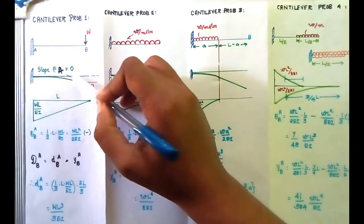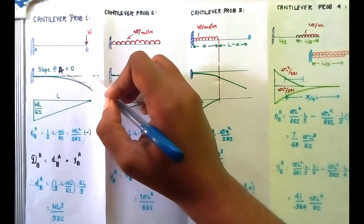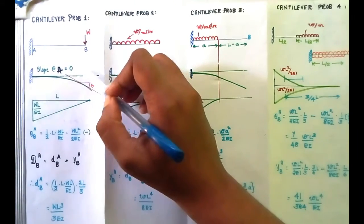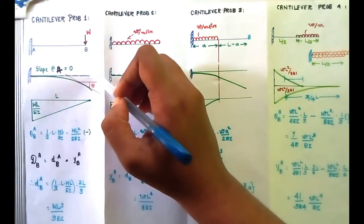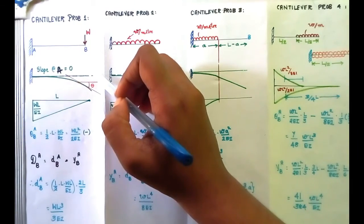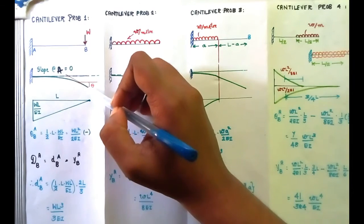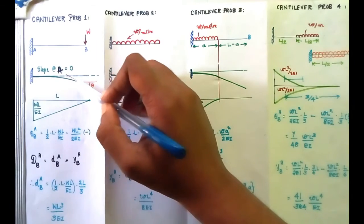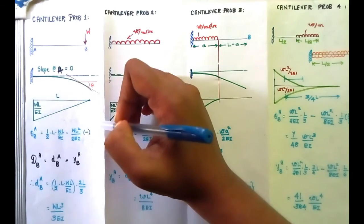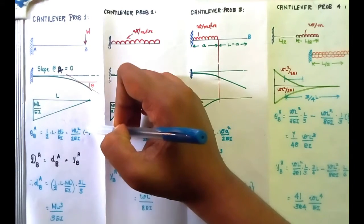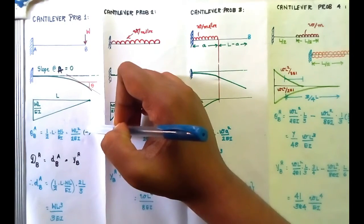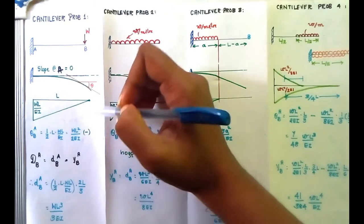The tangent at B is shown in orange. The reference tangent is the tangent at A, which is the horizontal axis itself. Since the rotation is in the clockwise direction, we take it as negative because it is a hogging moment. So the slope is minus WL squared by 2EI.